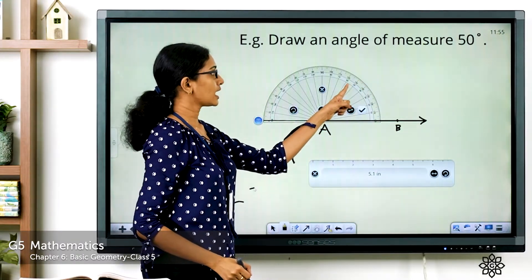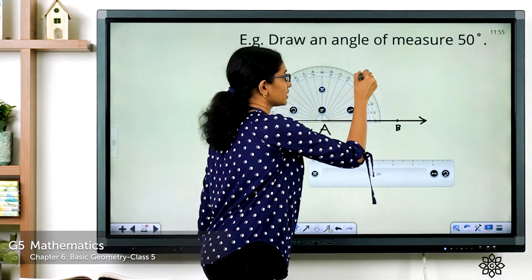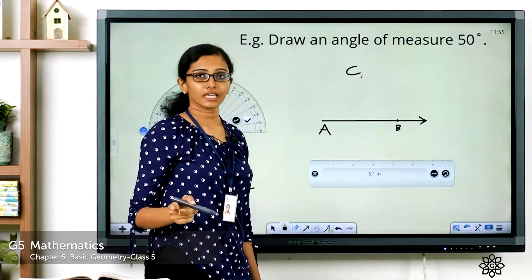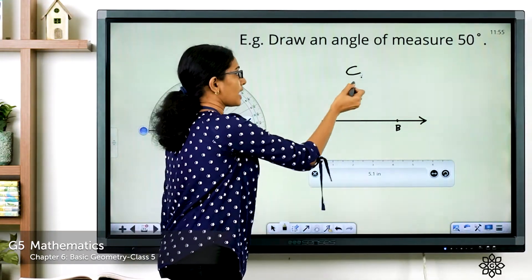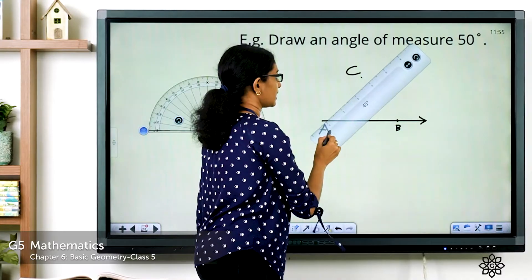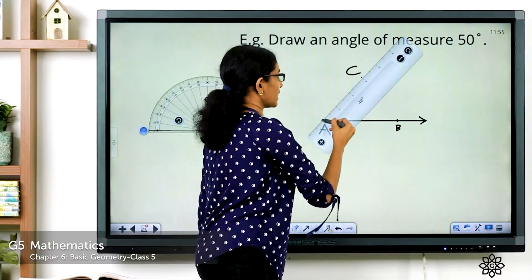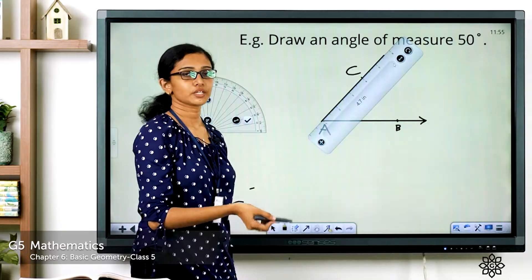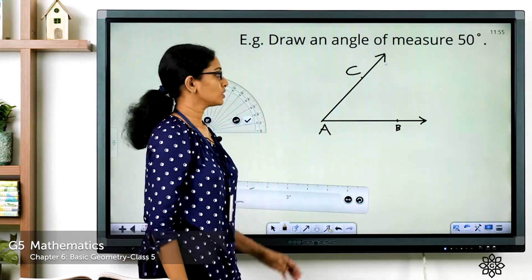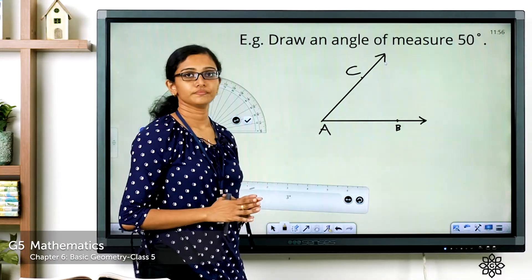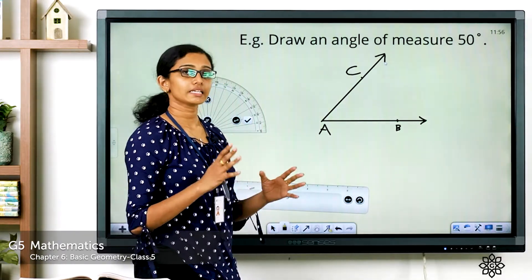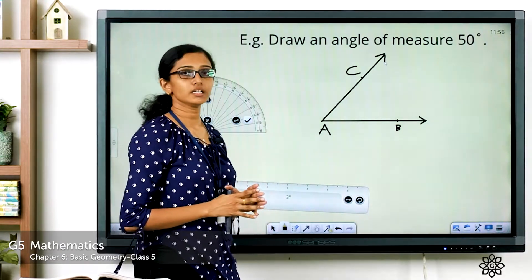We can see 50 on the inner scale — mark a point corresponding to the 50-degree mark. Set aside the protractor and name the point C. The next step is to join A and C. Take your ruler, place it properly, and draw a line joining A and C, passing through C. Set aside the ruler and put an arrow mark. Now we have drawn the arm AC.